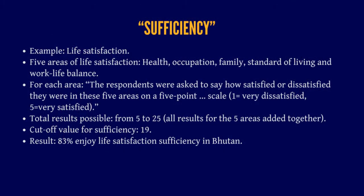For sufficiency in life satisfaction, there are five areas: health, occupation, family, standard of living, and work-life balance. For each area, respondents were asked how satisfied or dissatisfied they are on a five-point scale, where one was very dissatisfied and five was very satisfied. The total results range from five to twenty-five. The cutoff value for sufficiency is 19, which is relatively high, and 83% of people in Bhutan enjoy life satisfaction sufficiency.